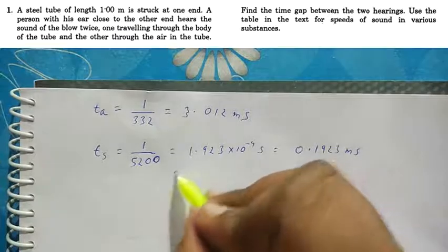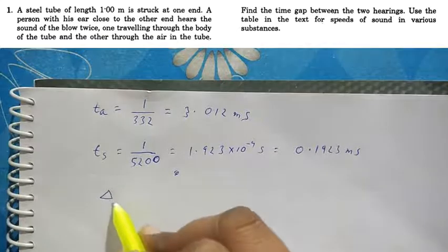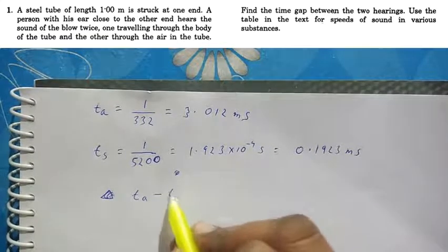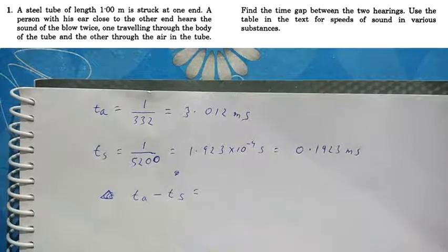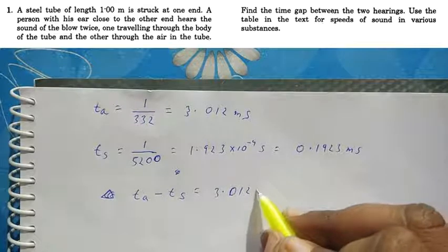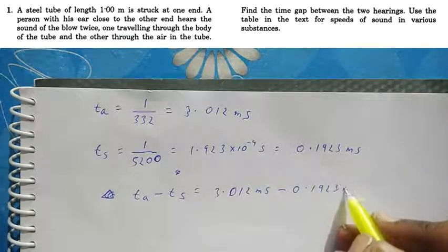So the difference comes to be, what's the difference in the time? Difference in time will be time of air minus time of steel. That comes to be 3.012 milliseconds minus 0.1923 milliseconds.